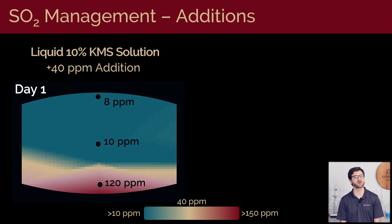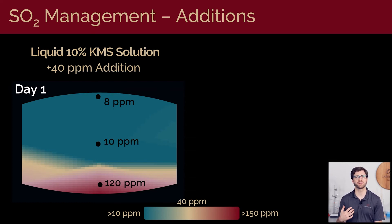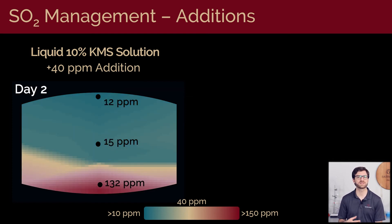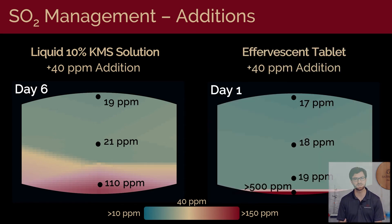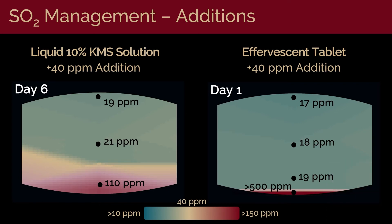In both cases we made an addition equivalent to raising the concentration of the whole barrel by 40 ppm, and the barrels were left alone after additions — not stirred or moved with a forklift. For the aqueous KMS solution case, on day one about an hour after the addition, only about a quarter of the addition has made it up to the top of the barrel, with the majority concentrated at the bottom. As we march forward in time, we see some more of the sulfites diffusing towards the top, but still only about half of the addition has made it to the top after about a week. For the effervescent tablet case, on day one after about an hour, half of the addition has made it to the top from the effervescent action, with the remainder at the very bottom surface of the barrel. After almost two weeks, we still have a small concentrated layer remaining at the bottom.